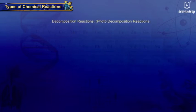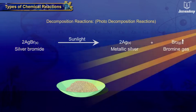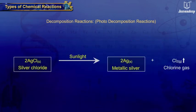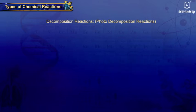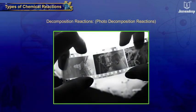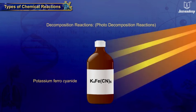Photo-decomposition Reactions: The pale yellow silver bromide undergoes decomposition and turns gray when exposed to sunlight. A similar reaction is given by silver chloride. This property of silver chloride and silver bromide is used in black and white photography. During the developing process, potassium ferrocyanide — K₄Fe(CN)₆ — also undergoes decomposition in the presence of sunlight, and hence it is stored in dark-colored bottles.